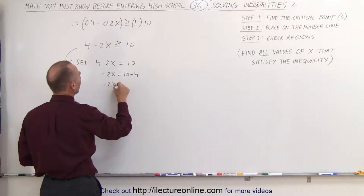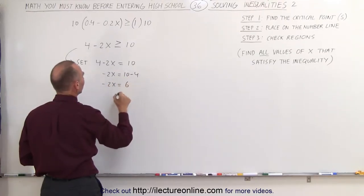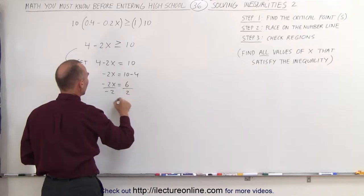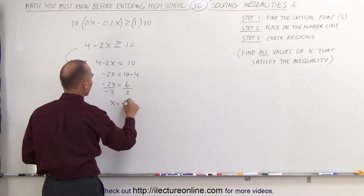-2x = 6, and divide both sides by -2. We get x = -3. This is the critical point.